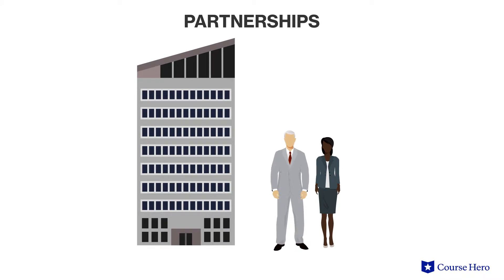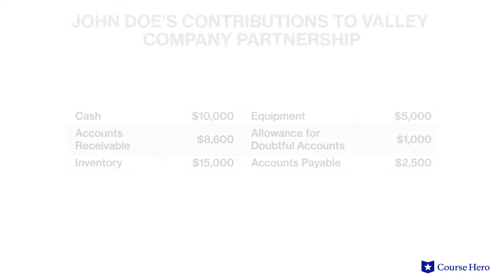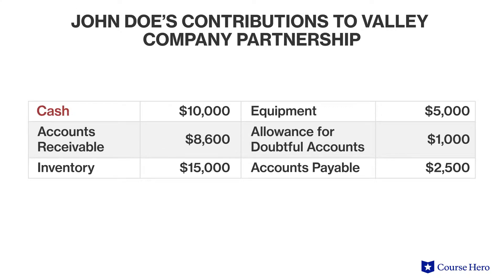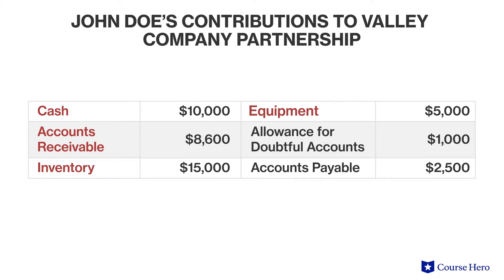Suppose John Doe and Jane Smith are owners of Valley Company. John contributes cash, accounts receivable, inventory, and equipment to the partnership. The assets contributed by John are subject to some outstanding accounts payable.